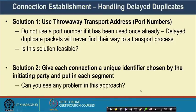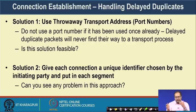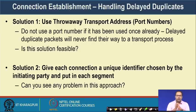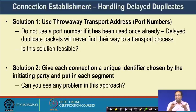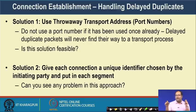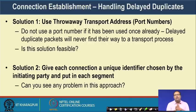The second solution is to give each connection a unique identifier chosen by the initiating party and put that unique identifier in each packet. This approach looks good, but the problem is that every time you need to design a unique identifier and ensure it is unique globally. Designing an algorithm to generate a globally unique identifier that survives system crashes requires hardware triggers, and this algorithm has a significant amount of overhead associated with it.